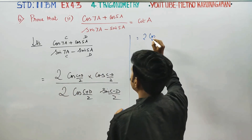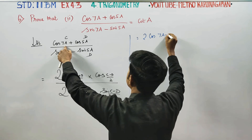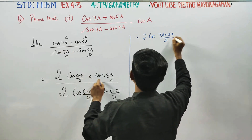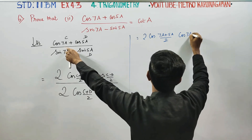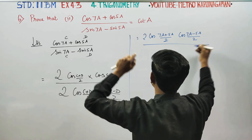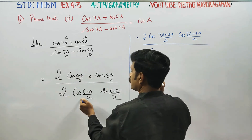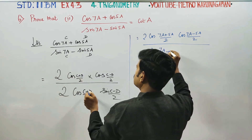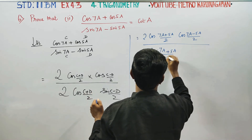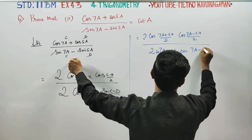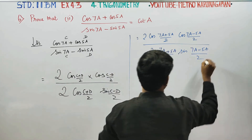2 cos of C plus D, that is 7A plus 5A by 2, times cos of C minus D, that is 7A minus 5A by 2, divided by 2 times cos of 7A plus 5A by 2, times sin of 7A minus 5A by 2.